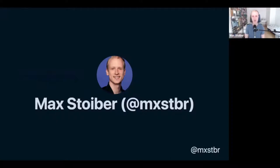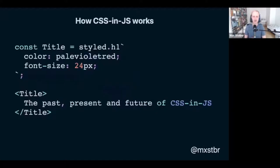First we gotta cover what actually is CSS-in-JS. I'm the creator of a library called Styled Components, but there are many other libraries out there. This is an example of what Styled Components looks like: we define a title React component that will render an h1 HTML tag, then we say which styles it should have — a color of pale violet red and a font size of 24 pixels. We can then use that React component like any other in our JSX. Under the hood, Styled Components injects that CSS into the DOM.